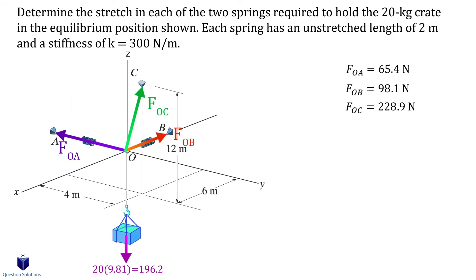We now have three equations with three unknowns. So let's solve them. To figure out the stretch in each spring, all we need to do is use Hooke's law. K is the stiffness of the spring and s is the elongation or compression. Let's start with spring OA. Next we have spring OB. These values tell us how much the springs stretched after the 20 kilogram crate was hung.